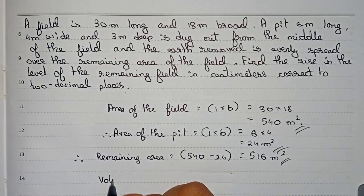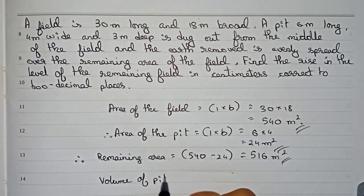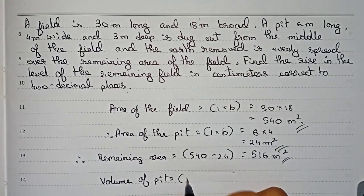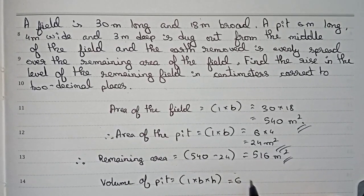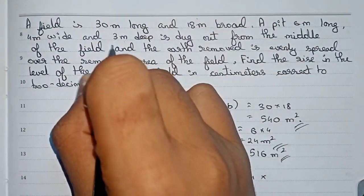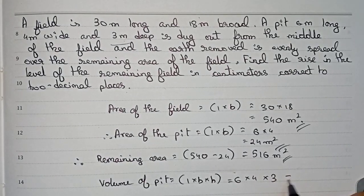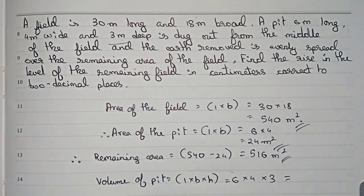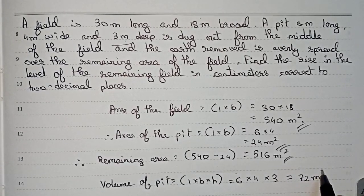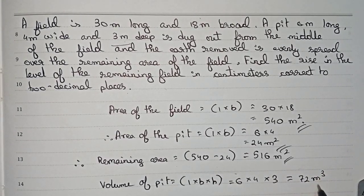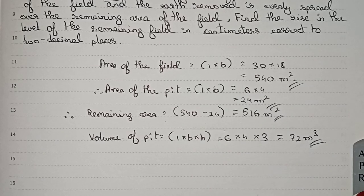Now I will find out the volume of the pit. Volume of the pit is equal to length into breadth into height, so 6 into 4 into 3 meters. This gives us 72 meter cube. This is the volume of the pit.